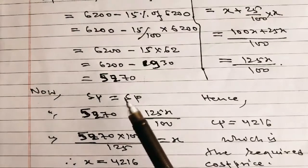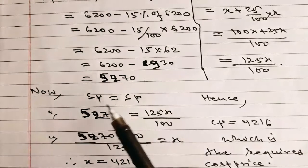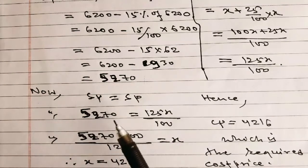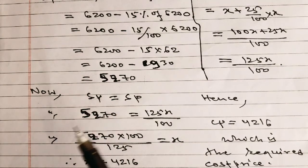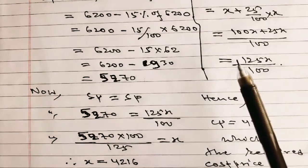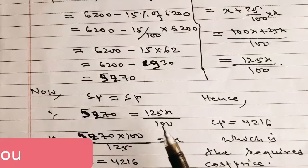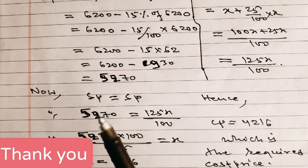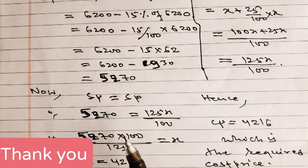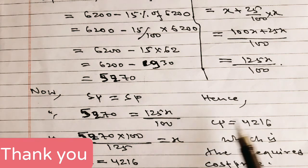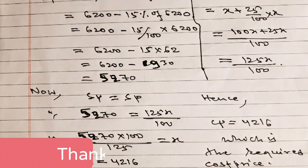Combining the two selling price expressions: SP from discount = 5270, SP from profit = 125x/100. Setting them equal: 5270 = 125x/100. Cross multiplying: x = 5270 × 100/125 = 4216. Therefore, the cost price of the article is rupees 4216.